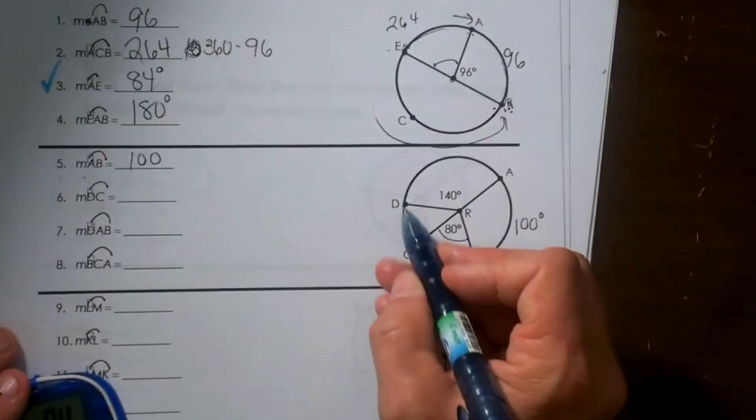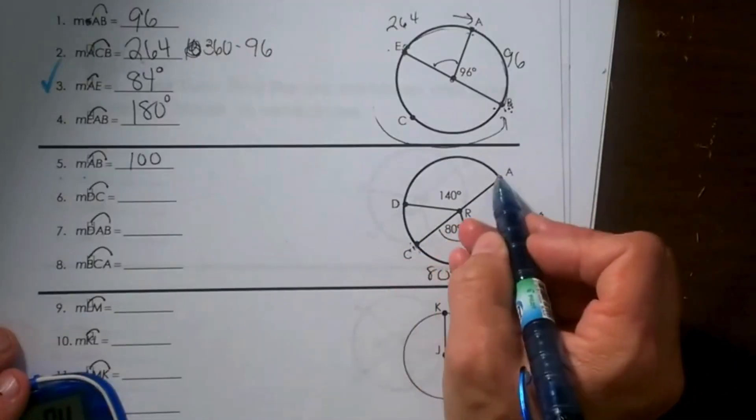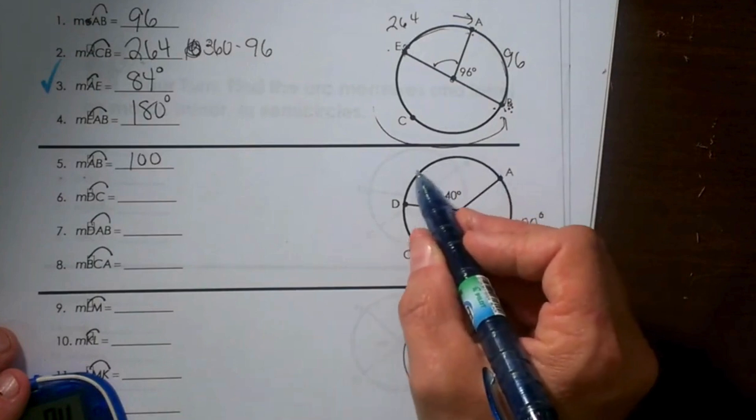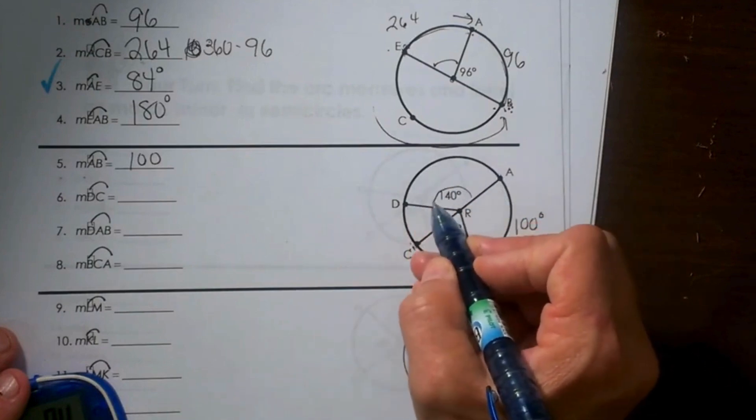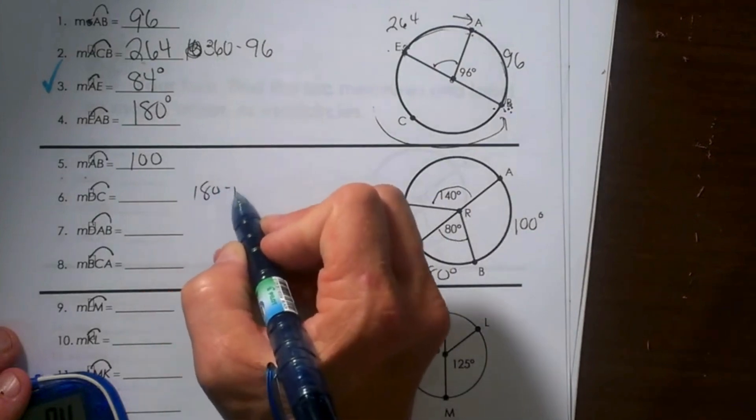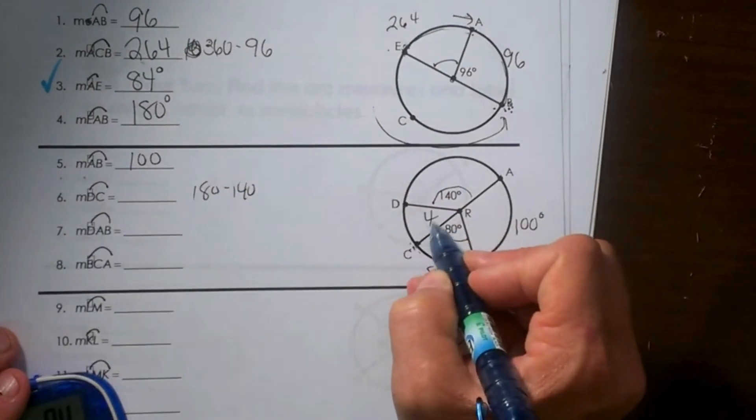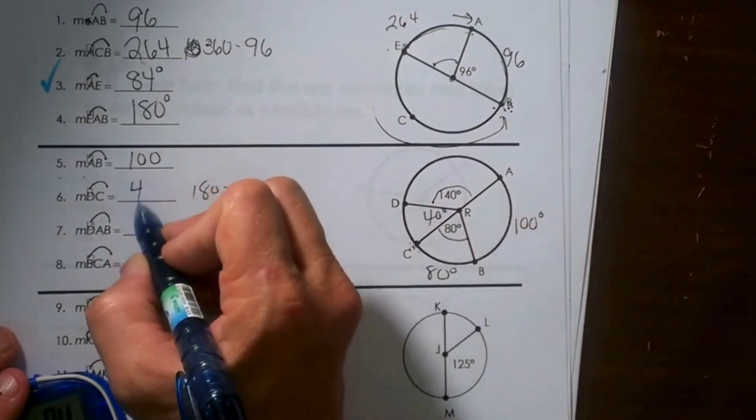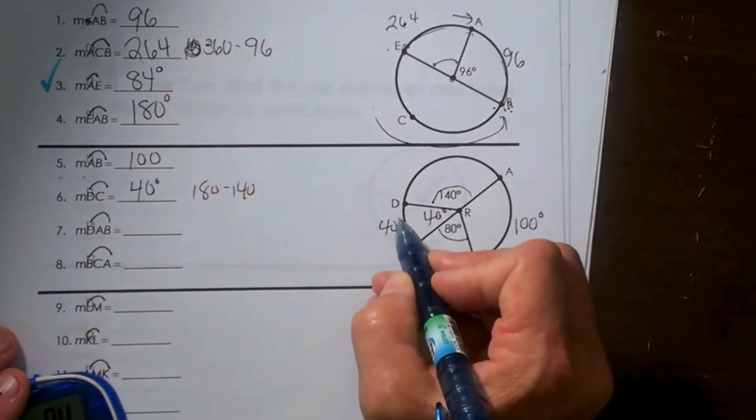Let's see, DC. Well, AC again is a diameter, and 180 degrees is over here, so this is 140. I take 180 and I subtract 140, and I am left with 40 degrees. So that is 40 degrees both for the angle and for the arc.